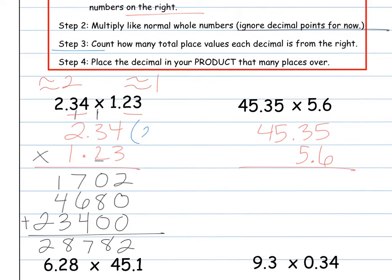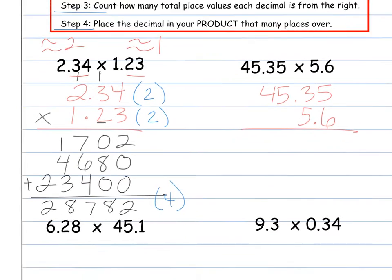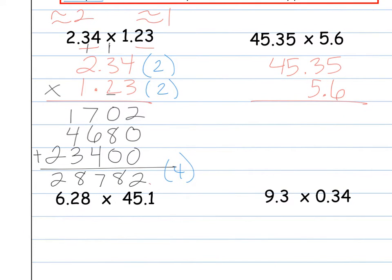Step 3 is we count how many total place values each decimal is from the right. Notice there's two numbers to the right of the decimal, and there's two numbers to the right of the decimal. So we place the decimal in your product. That total over 2 and 2 is 4 places. So we take our decimal here and move it 1, 2, 3, 4 for a product of 2 and 8,782 ten-thousandths, which is an appropriate number when multiplying.